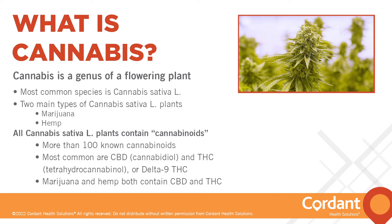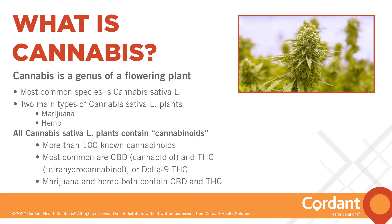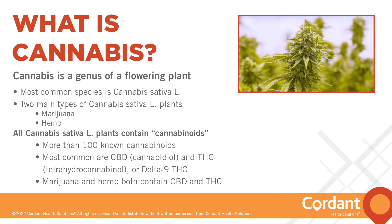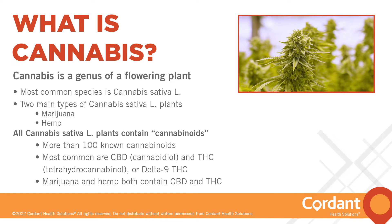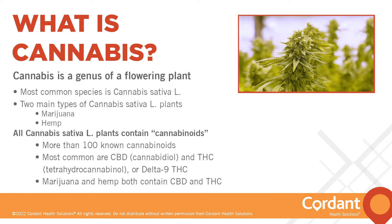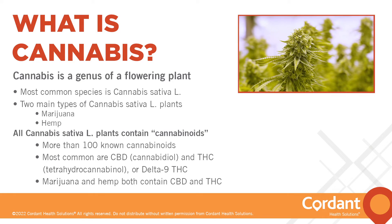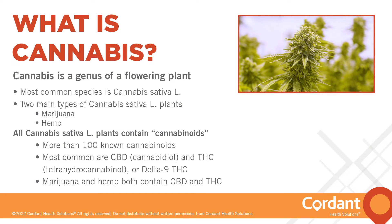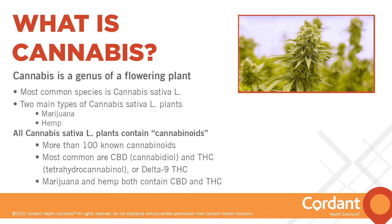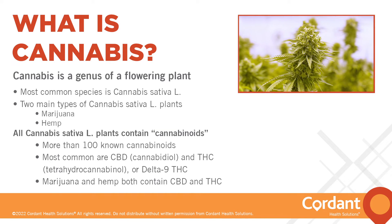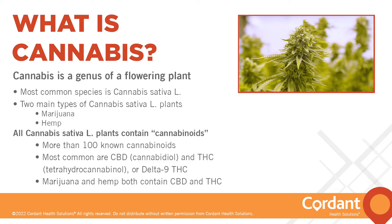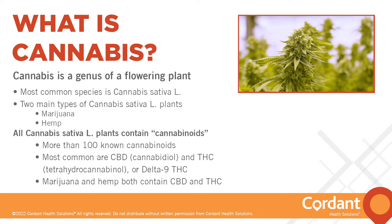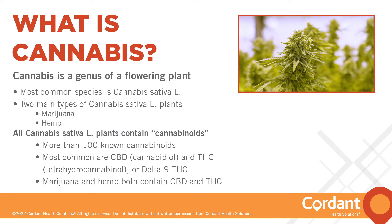Cannabis is a genus of a flowering plant. There are three main species, but the better known is Cannabis sativa. Within this species there are two main types of plants known commonly as marijuana and hemp. All Cannabis sativa plants contain what we refer to as cannabinoids — there are over 100 identified in these plants, but the most well known are CBD and delta-9 THC.